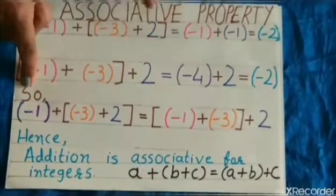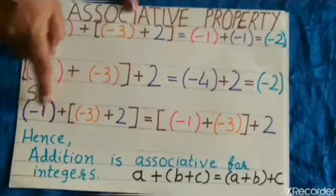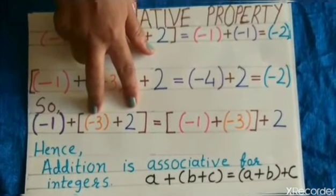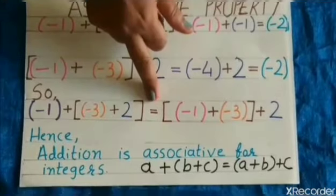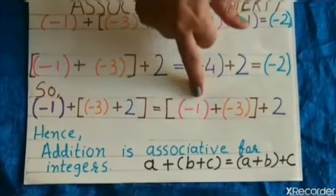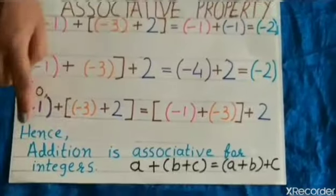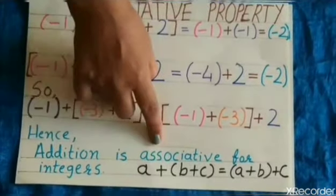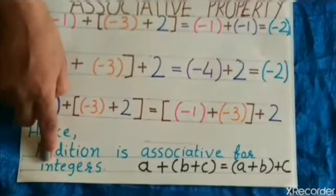So, we can say that minus 1 plus group of minus 3 plus 2 is equal to group of minus 1 plus minus 3 plus 2. Hence, we can say addition is associative for integers.